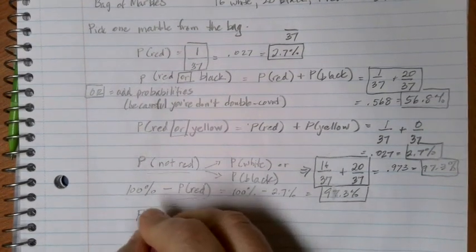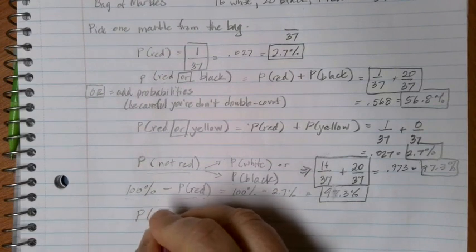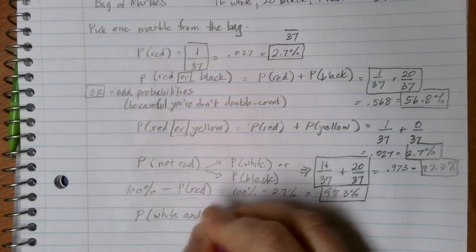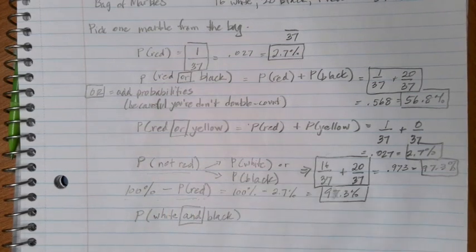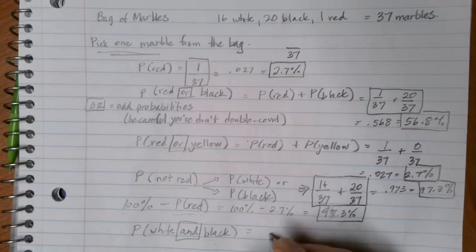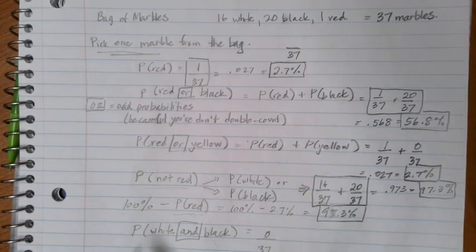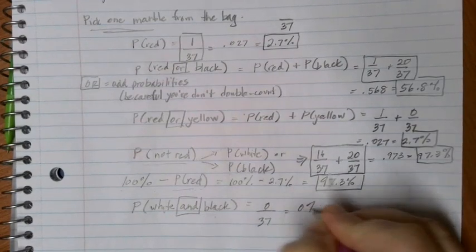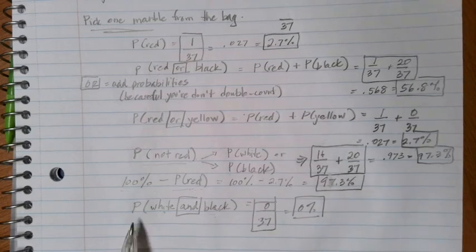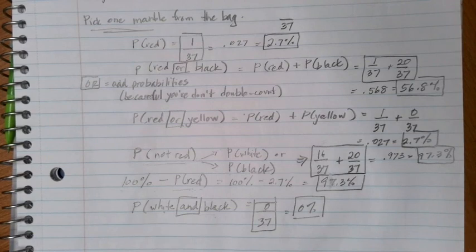What if instead I wanted to find the probability of picking a white and a black marble? In this case, I'm using the word 'and', which means I need both of these things to happen. What's the chance of picking a marble that's both white and black when I'm only picking one marble from the bag? Well, that's impossible — there are no conditions where I can fulfill both at the same time with only one marble. If I wanted to have two marbles, then I could pick a white marble and a black marble. So let's look at that case in the next video, where we draw two marbles from the bag.